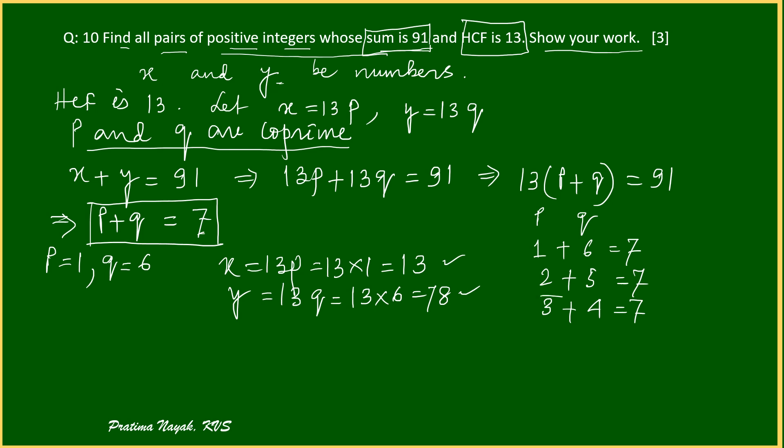Next option. When P is equal to 2 and Q is equal to 5. It may be the other one also. Q may be 2, P may be 5. So that time X will be 13 into 2, 26, and Y will be 13 into 5, that will be 65. So 26 and 65 are the two pairs.